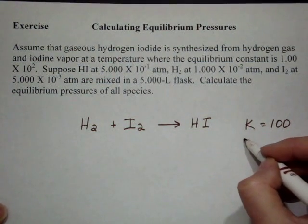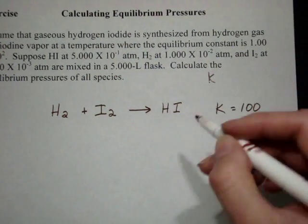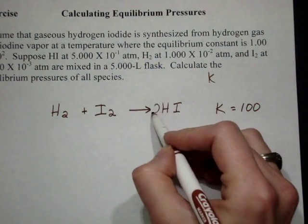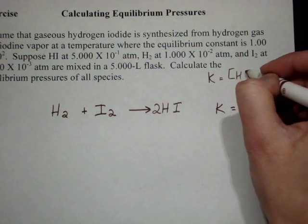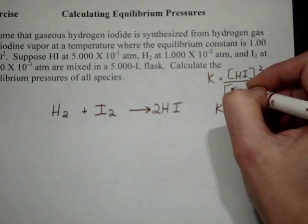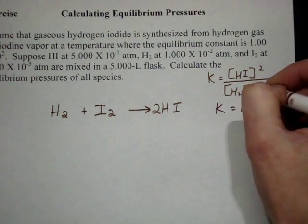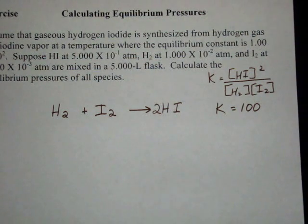I'm going to go ahead and write the expression down over here. For K, I need a balanced equation, so I need two HIs for my H2 and my I2. So, I get HI squared over H2 times I2.